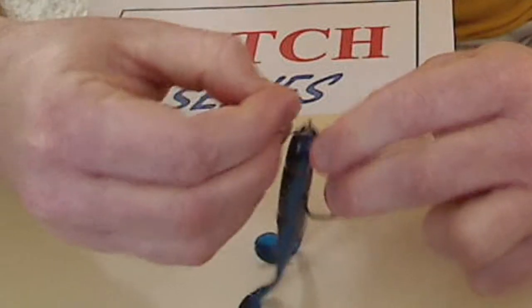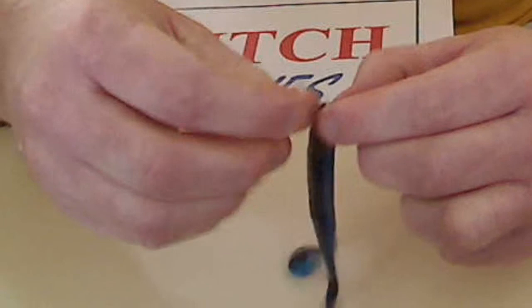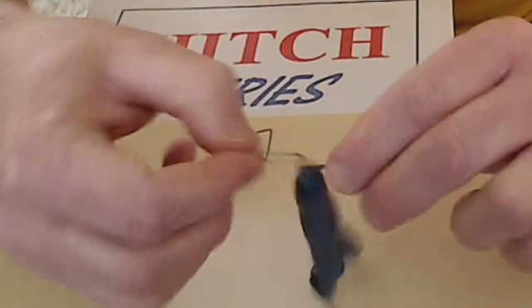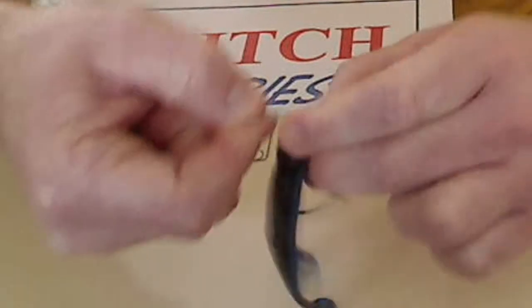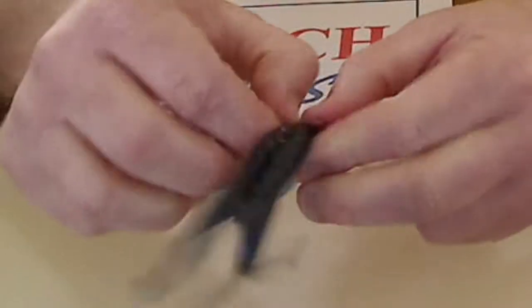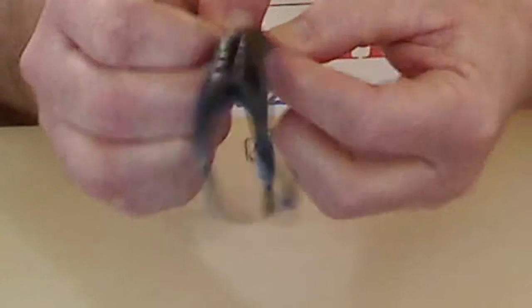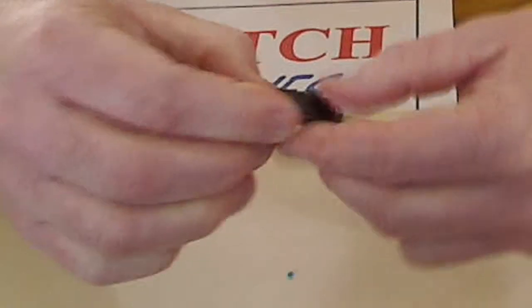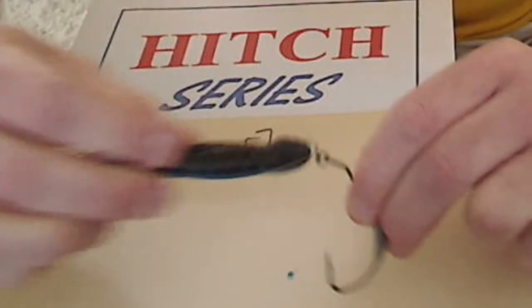Take the trailer hitch, thread it onto the eye of the hook. All the way through to the eye of the trailer hitch is through the eye of the hook. You simply insert the legs into the side of your favorite bait, and it's pinned to the hook.